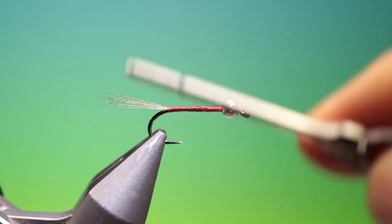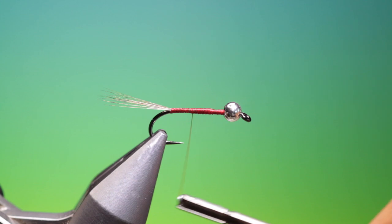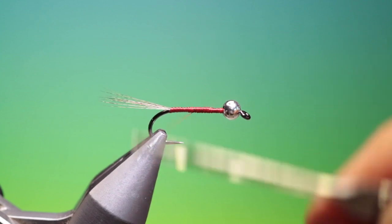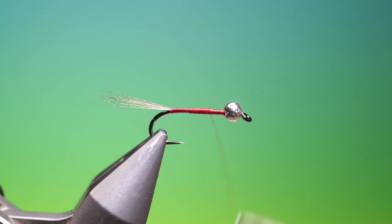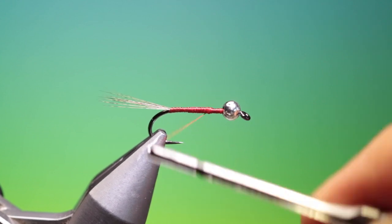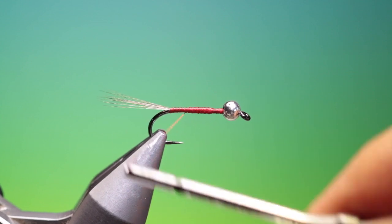We want a slight taper on this body. I think it makes for a nicer nymph. So we'll just build that up a wee bit. You can tie this in lots of different colours, whatever you like, whatever works for you.